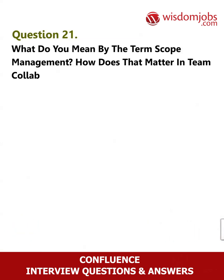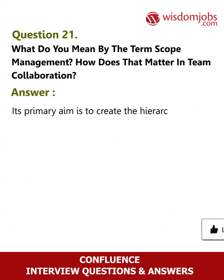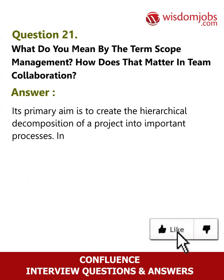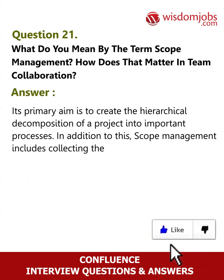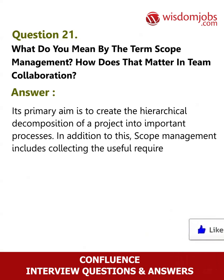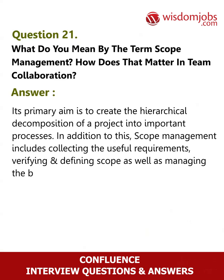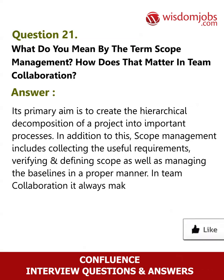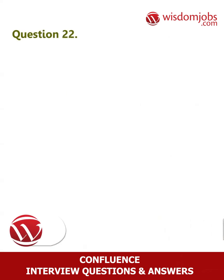Question 21: What do you mean by the term scope management and how does that matter in team collaboration? Answer: Its primary aim is to create the hierarchical decomposition of a project. Scope management includes collecting the useful requirements, verifying and defining scope, as well as managing the baselines in a proper manner. In team collaboration, it always makes sure of improved productivity and better accomplishment of a project.